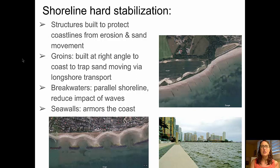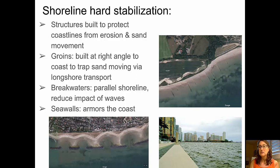Looking now at stabilizing shorelines. We have hard stabilization of shorelines — these are structures that are built to protect coastlines from erosion and from sand movement. The first type is groins. Groins are structures built at right angles to the coastline, and they're built to trap sand that's moving via longshore transport. In the top picture, we can see examples of a groin field, where several groins are built along the coastline to protect it from longshore transport and sediment movement along the shore.